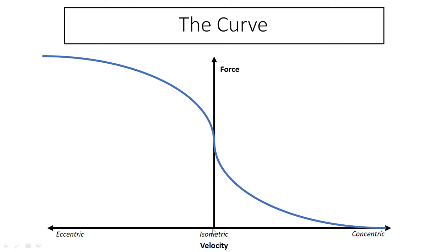As we go further and further this way, that's concentric, so the velocity is increasing concentrically. And then on this side of here, this is actually negative velocity, so this is eccentric contractions. As we move further and further this way, this is actually faster eccentric contractions.